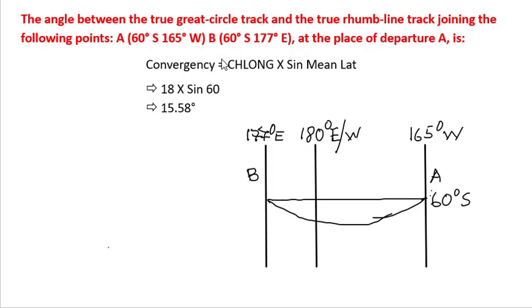Now what does this convergence mean? This convergence means that this angle which you are leaving at A and this angle would differ by 15.58 degrees.